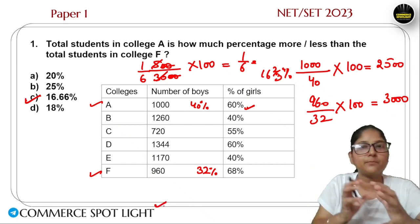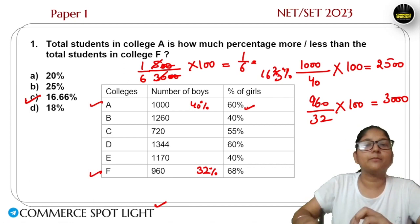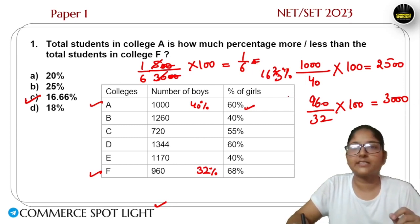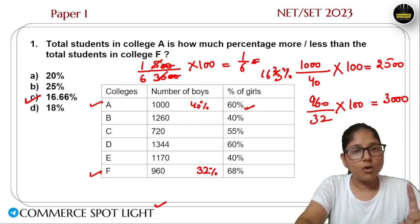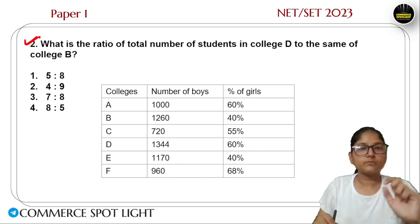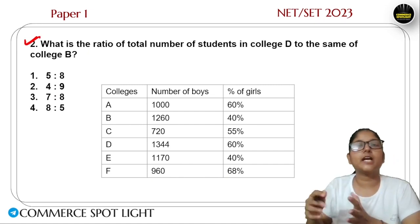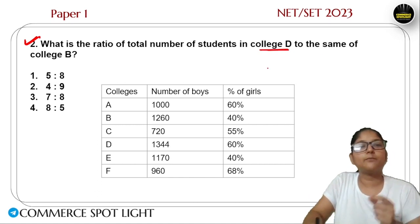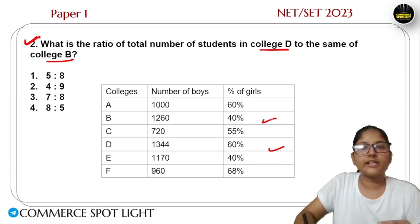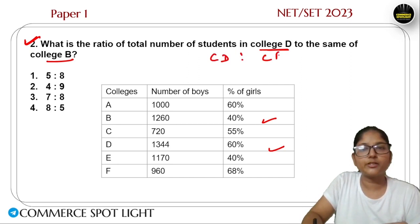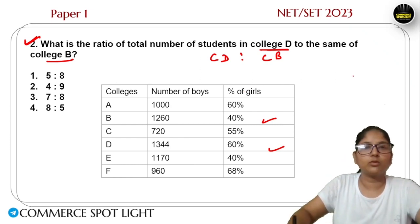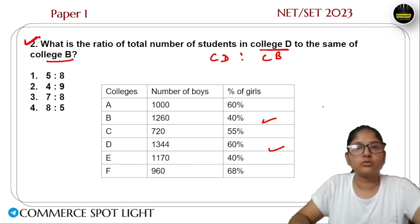16.67% is the correct answer. I shared a chart in the Telegram channel where I have percentage-to-fraction and fraction conversions, so remember that 1/6 equals 16 and 2/3 percent. Now we will see the second question — first you solve it, then see. The question asks for the ratio of total students in College D to the sum of total students in College B and the ratio of College B total students.